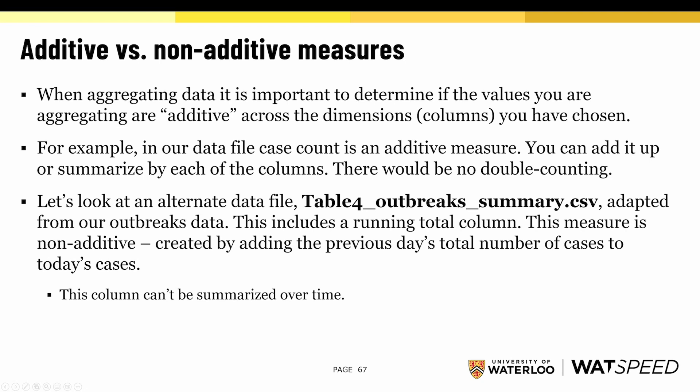When we talk about aggregating data, we need to think about which data we can aggregate. This gets into the idea of additive versus non-additive measures or values. When you're aggregating, it's important to figure out if what you're aggregating can be added across the columns you've chosen. In our example, the case count is the number of cases for a particular day, so if we add up the number of cases per day to get the total cases, this is an additive measure — we would not have any double counting.